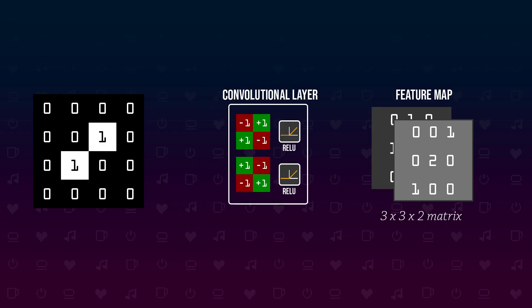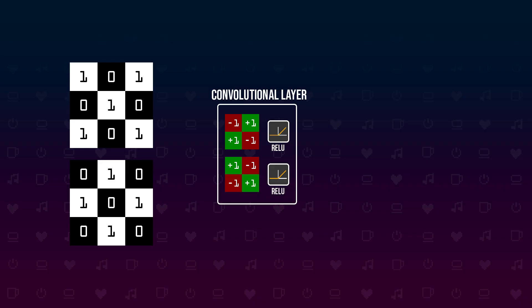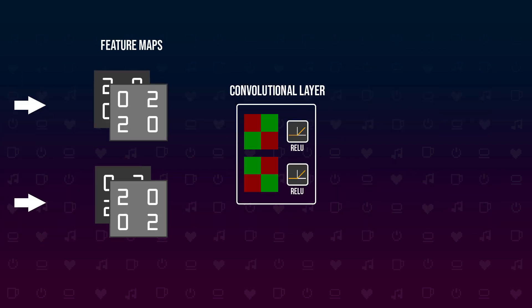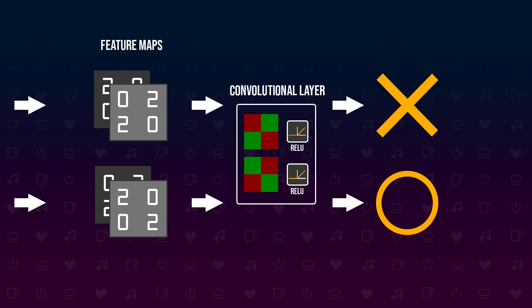We have just defined a convolutional layer that takes a 4x4 feature map with black and white pixels as the features and outputs a 3x3 feature map where the existence of forward and backward slashes are the features. But how do we go from detecting forward and backward slashes to more complex images? Here we have two images of 3x3 pixels containing multiple forward and backward slashes. Applying our convolution layer we get the correct results. These images show an X and an O, and we can now define a new convolution layer that takes our 2x2x2 feature map of forward and backward slashes and outputs a feature map for X's and O's.